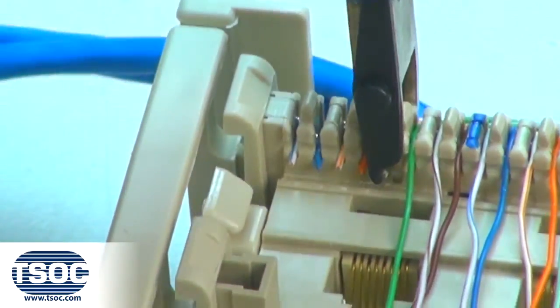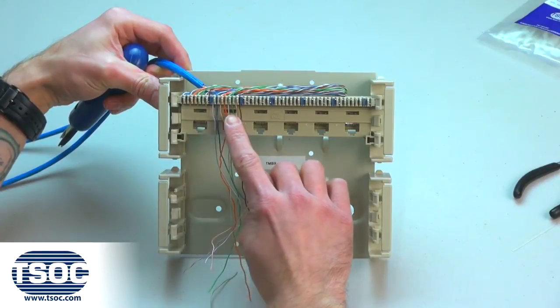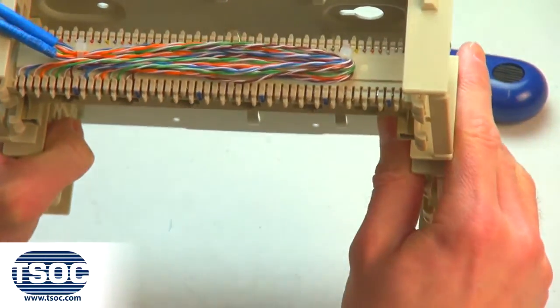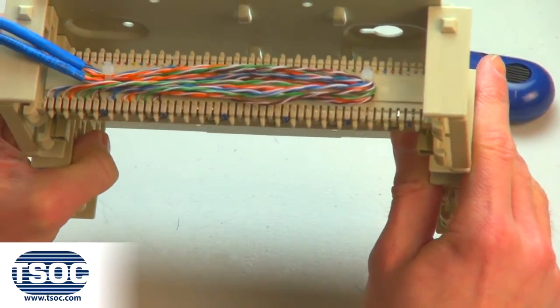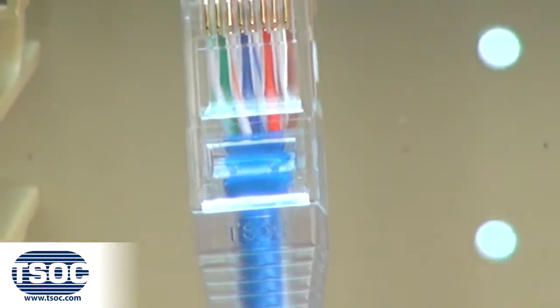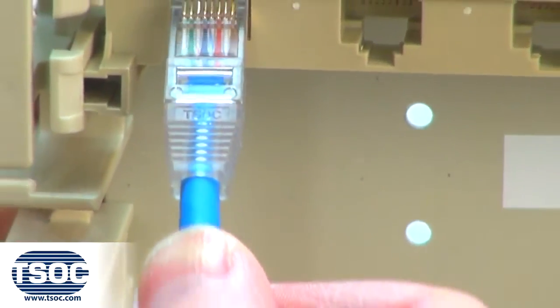Step 5: Remove the modular distribution connector to inspect that all insulated conductors are terminated to the IDC or insulated displacement connectors. Insert the modular distribution connector into the distribution frame.